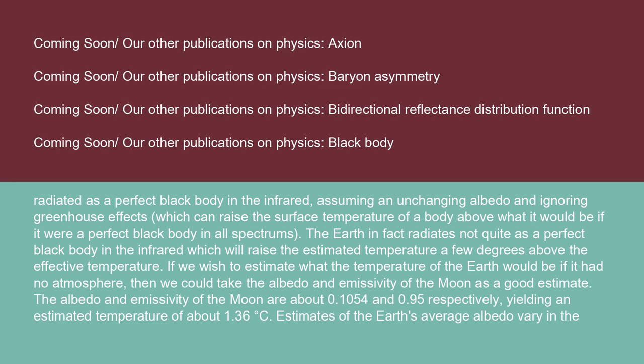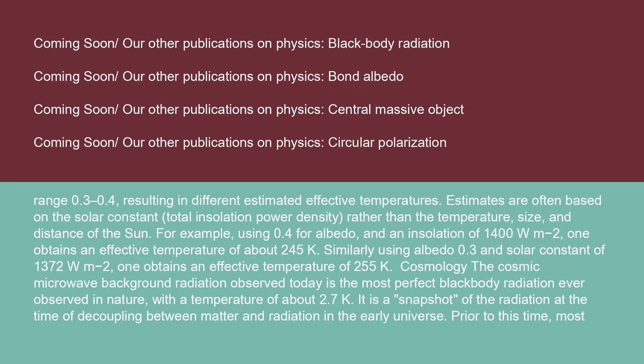If we wish to estimate what the temperature of the Earth would be if it had no atmosphere, we could take the albedo and emissivity of the Moon as a good estimate. The albedo and emissivity of the Moon are about 0.1054 and 0.95 respectively, yielding an estimated temperature of about 1.36°C. Estimates of the Earth's average albedo vary in the range 0.3 to 0.4, resulting in different estimated effective temperatures. Estimates are often based on the solar constant (total insolation power density) rather than the temperature, size, and distance of the Sun.